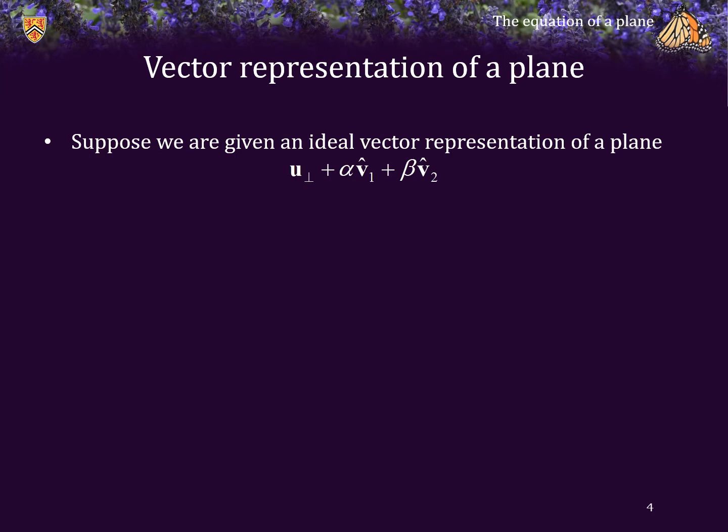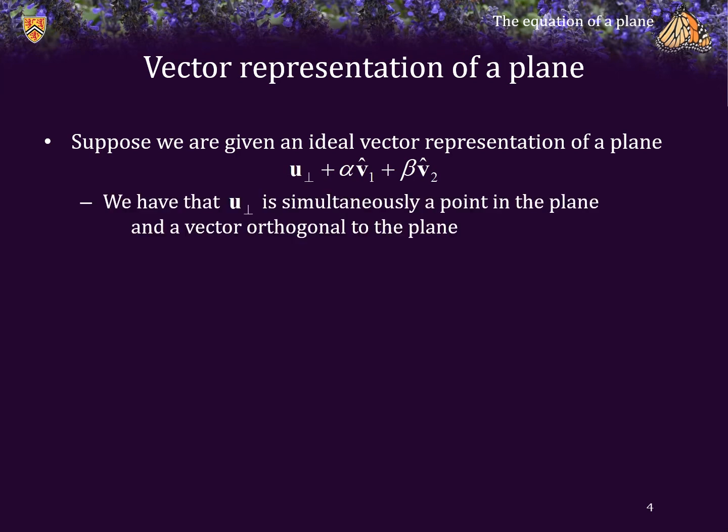Alright, suppose we are given an ideal vector representation of a plane, such as this. We have that U perp is simultaneously a point on the plane, while also being a vector orthogonal to the plane.